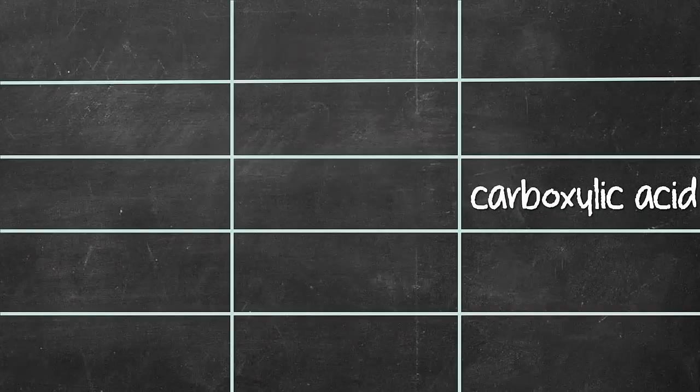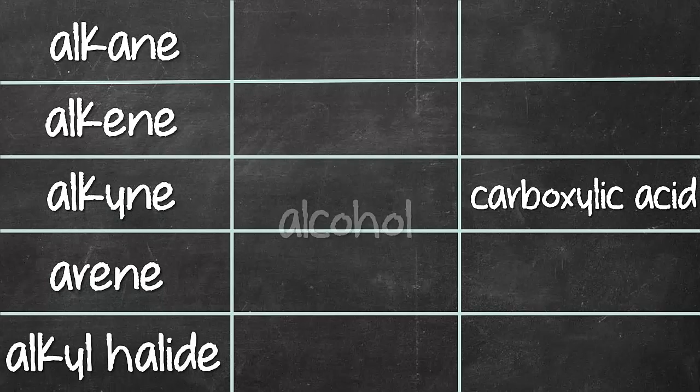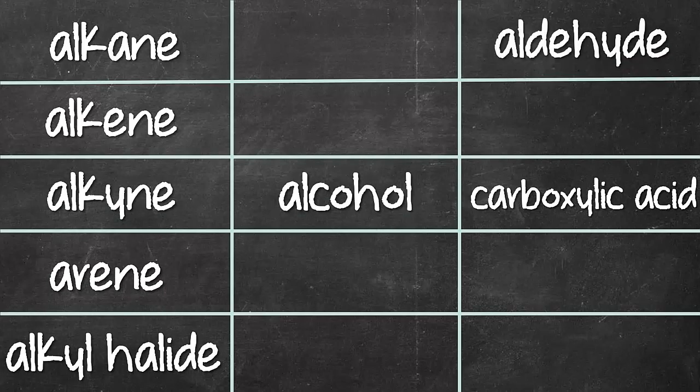1C carboxylic acid, 9As: alkane, alkene, alkyne, arine, alkyl halide, alcohol, aldehyde, amine, and amide.